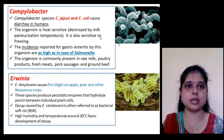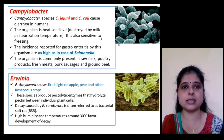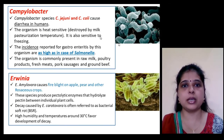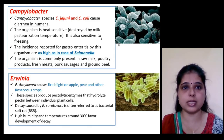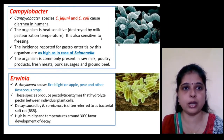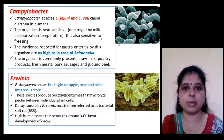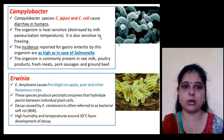Campylobacter — the species Campylobacter jejuni and Campylobacter coli — causes diarrhea in humans and is as dangerous as Salmonella bacteria. Erwinia causes fire blight in apple, pear, and other rosaceous crops.